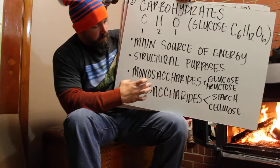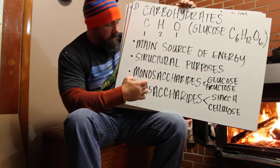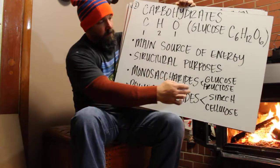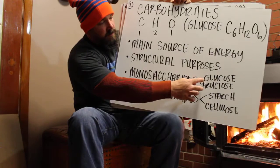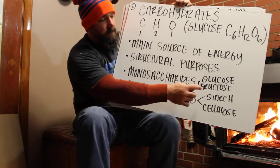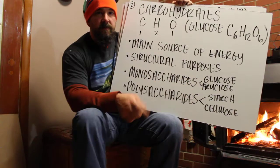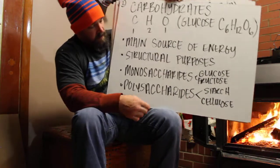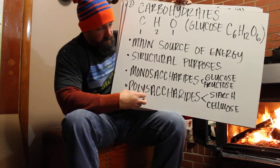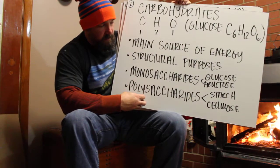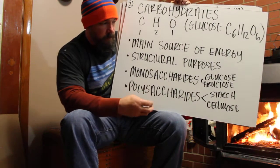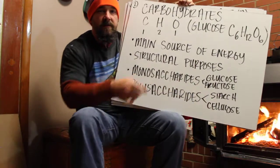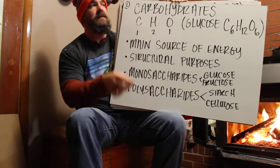The monomers are the single ones — the simple sugars like glucose and fructose, which is fruit sugar — that build up into polysaccharides, which are the starches and cellulose that you find in plants.